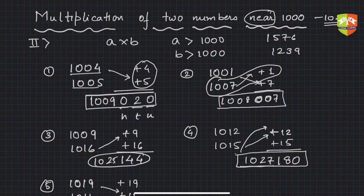In the next session, let's take the case where one number is lesser than thousand and one number is more than thousand.